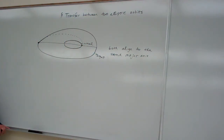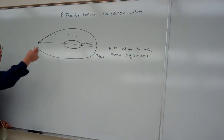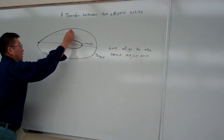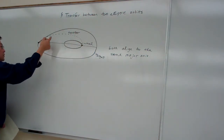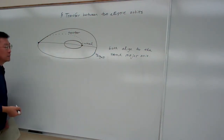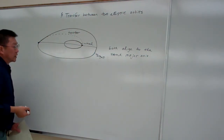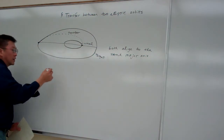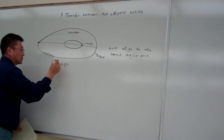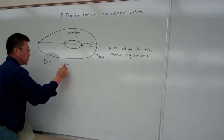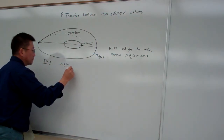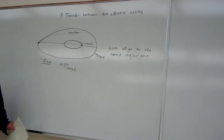So here we have three elliptic orbits, and basically, with the transfer, they are tangent to the initial orbit here. That takes half a cycle. For our case, we want to know what is the total delta-v for this.